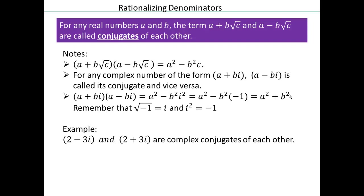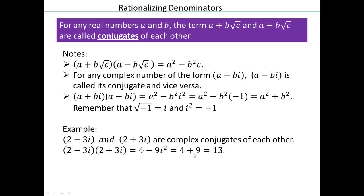Multiplying the conjugates (2 + 3i)(2 − 3i): 2 times 2 is 4; 2 times 3i plus negative 6i gives 0; negative 3i times positive 3i gives negative 3i squared, and since i squared is negative 1, that's positive 9. So 4 plus 9 gives you 13.